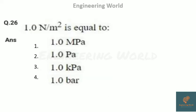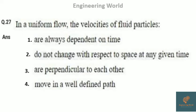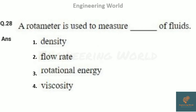One newton per meter squared is equal to one pascal — it is the unit of pressure. In uniform flow, the velocity vector is the same at all points at any given time, meaning the velocity of fluid particles does not change with respect to space at any given time.